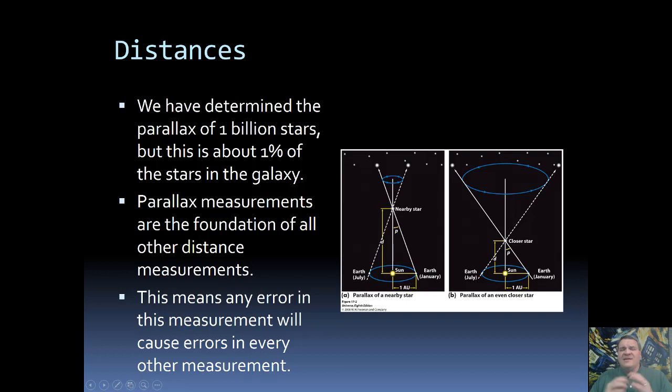Now one problem with parallax is, remember the farther away the object is the smaller the parallax angle is going to be. What this means is once something is far enough away the parallax angle is going to be so small we're not going to be able to see it anymore. And so there's going to be a practical limit to how far away we can determine distance using parallax.